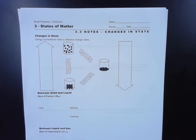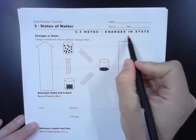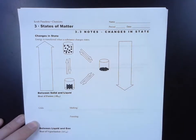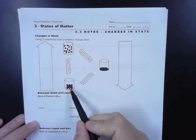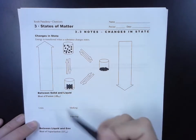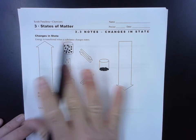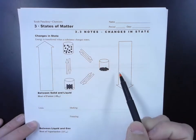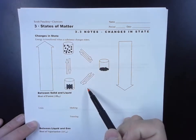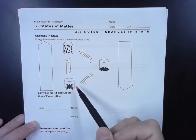This is notes 3.3, and I'd like to point out the title: Changes in State. So what does this change in state mean? Well, it means going from a solid to a liquid to a gas—that's a change in state where no new chemicals are being made, no new substances, no new matter is being made.